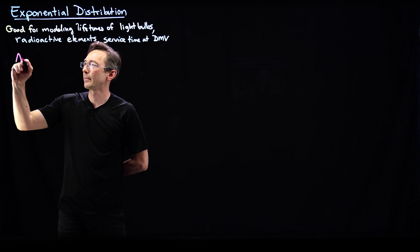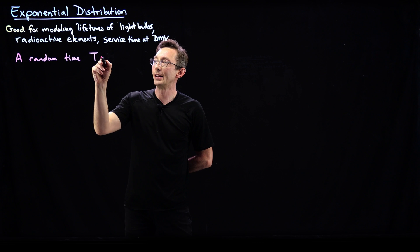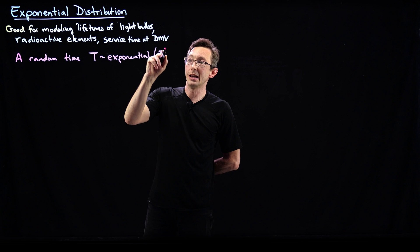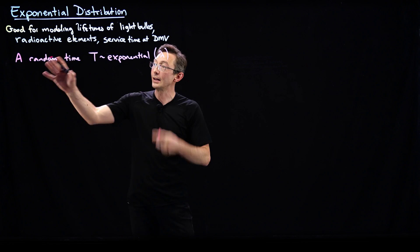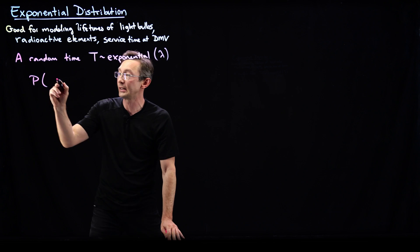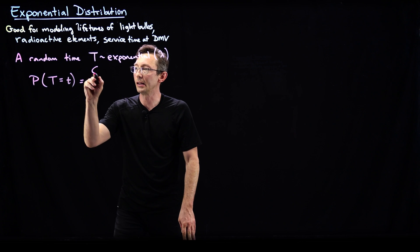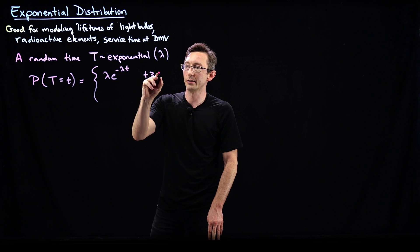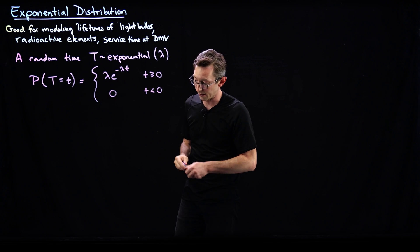A random time t is said to be exponentially distributed, or exponential, with parameter lambda. There's a single parameter that determines this exponential distribution — it's a positive number. A random time t is exponential if the probability of this random variable big T occurring at some specific little time t is lambda e to the minus lambda t for t greater than or equal to zero, and probability zero for t less than zero.